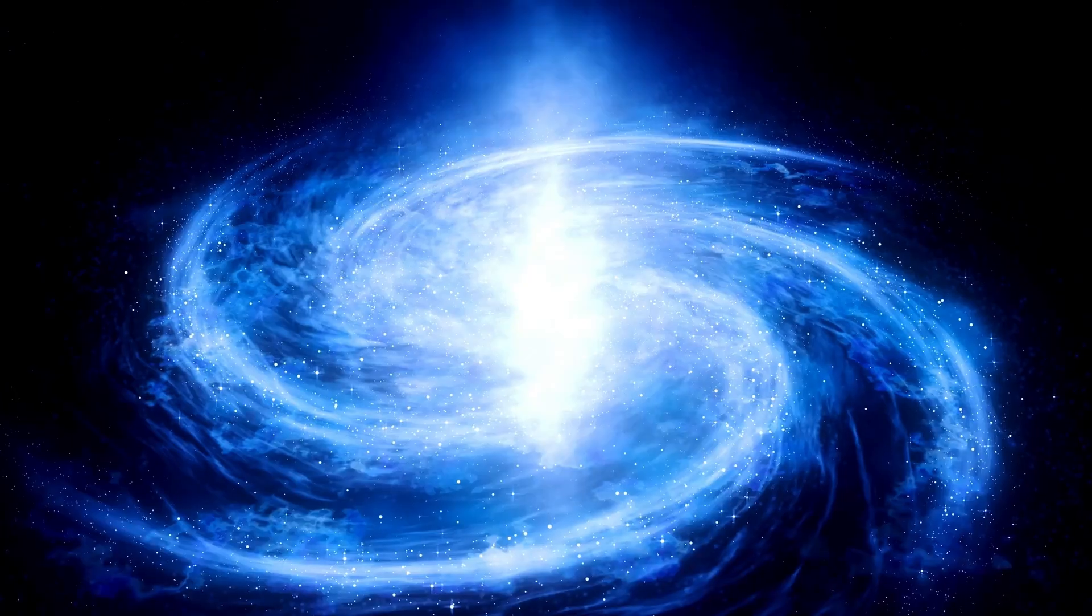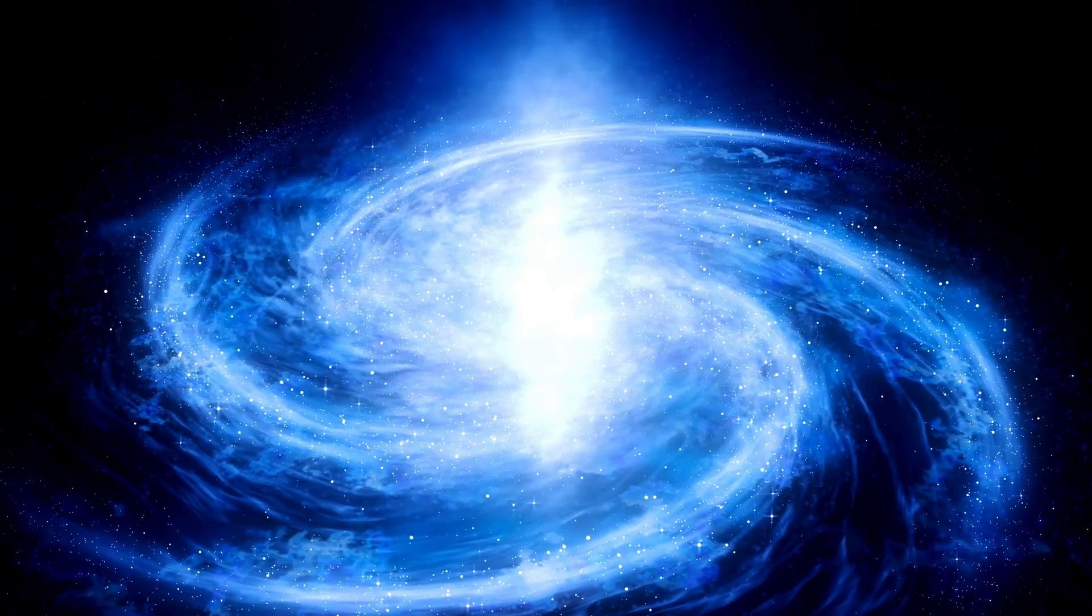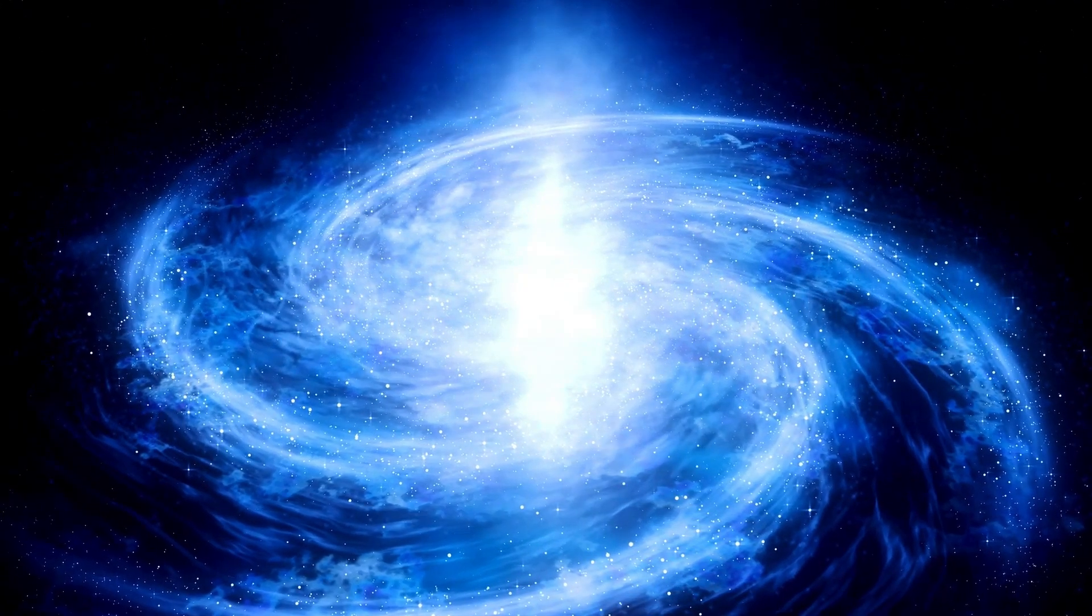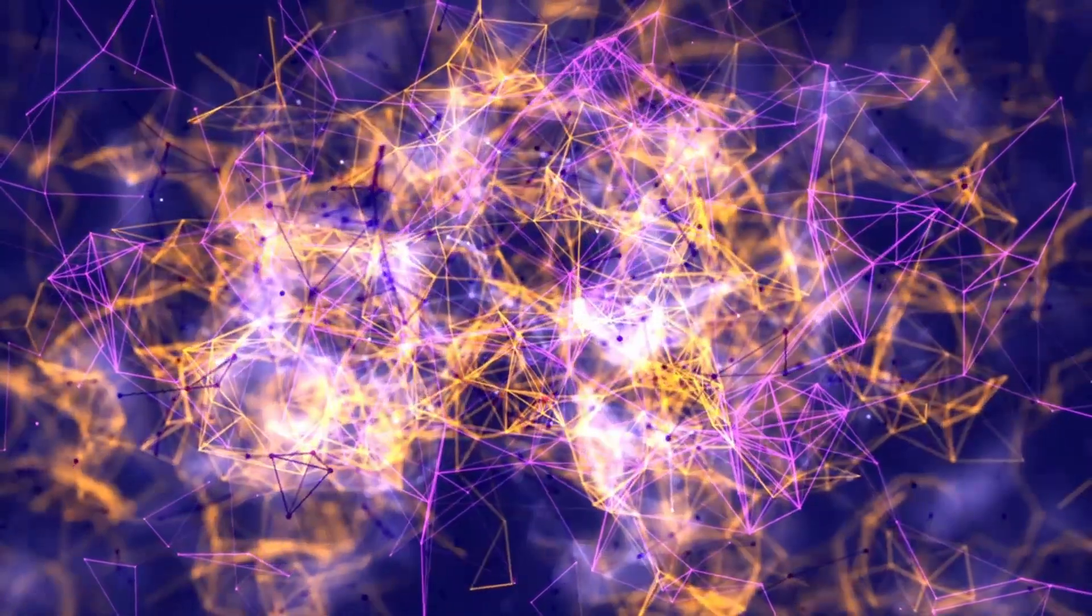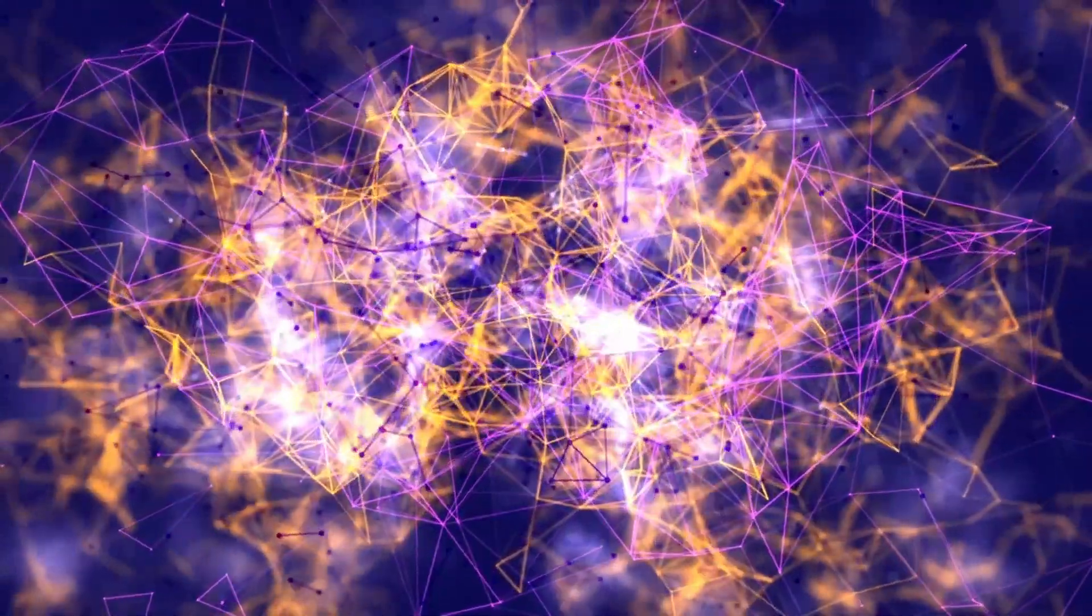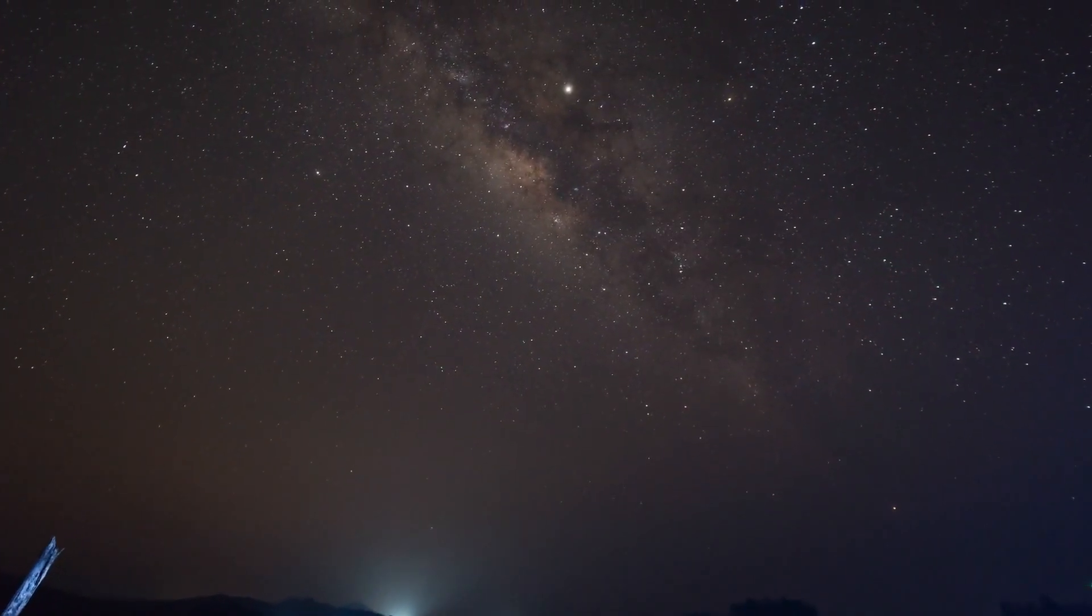Light travels at a finite speed, meaning it takes time to reach us from distant objects. This creates a boundary on what we can observe, as we can only see objects and events within a certain distance. This boundary is often referred to as the observable universe, which doesn't mean it's the total size of the universe but just the part we can currently detect with our technology.